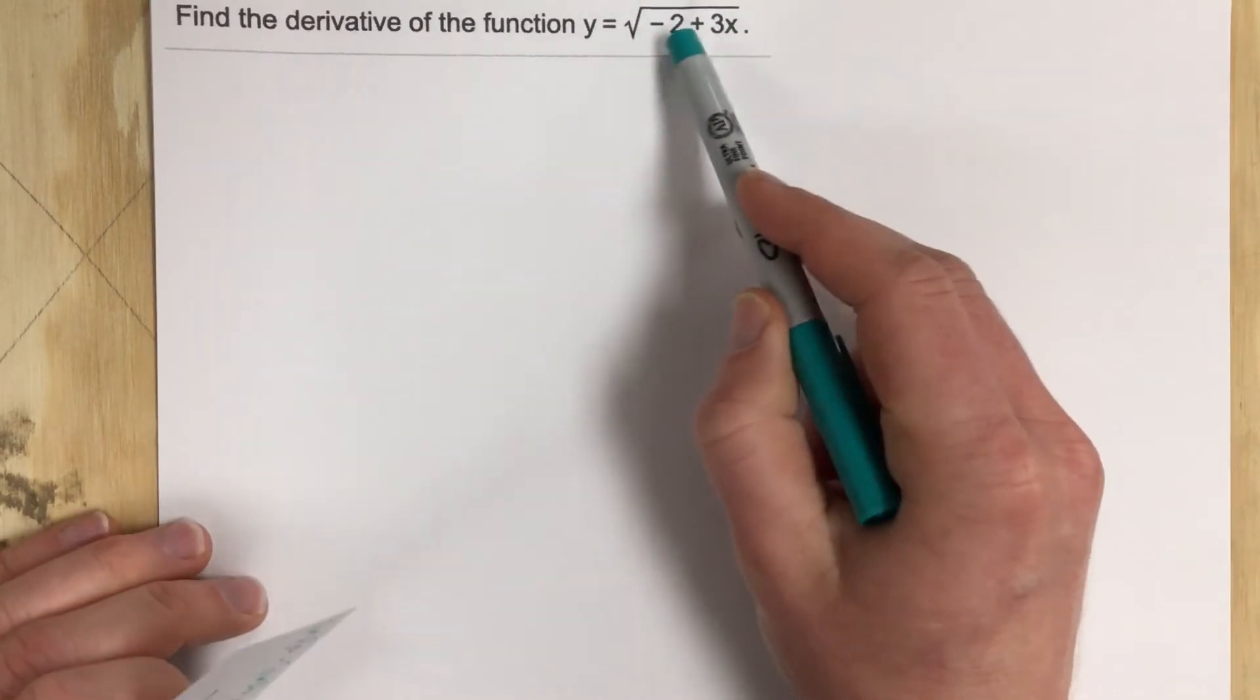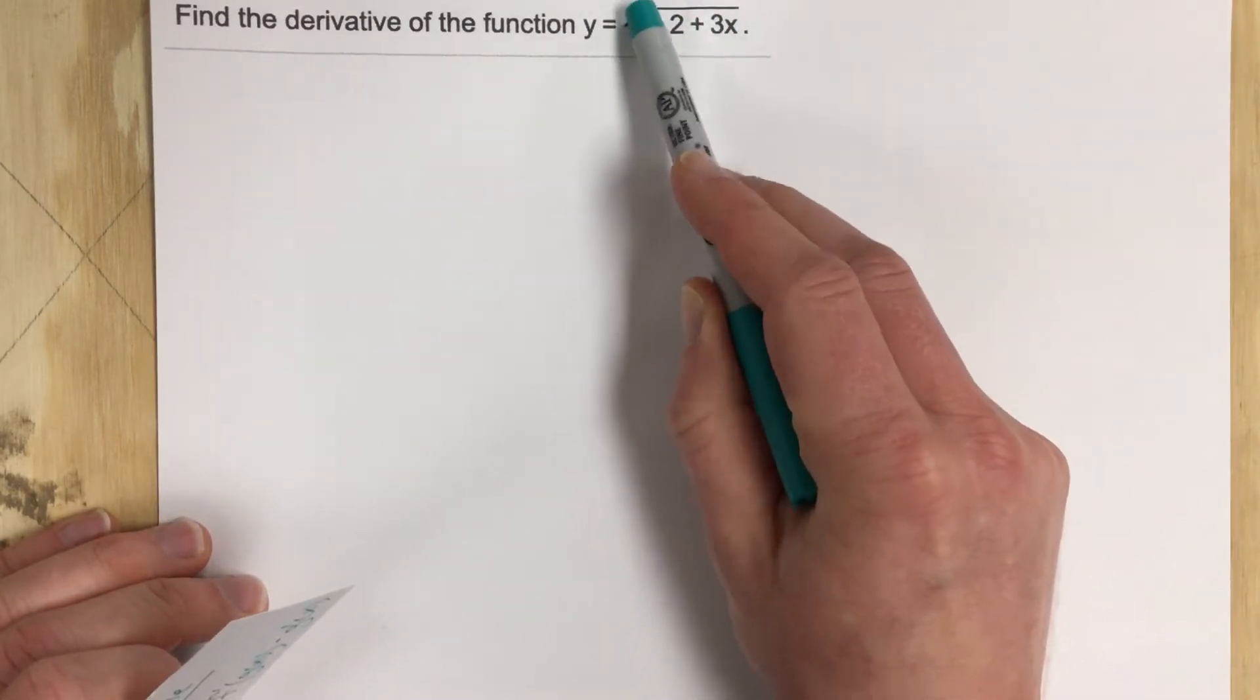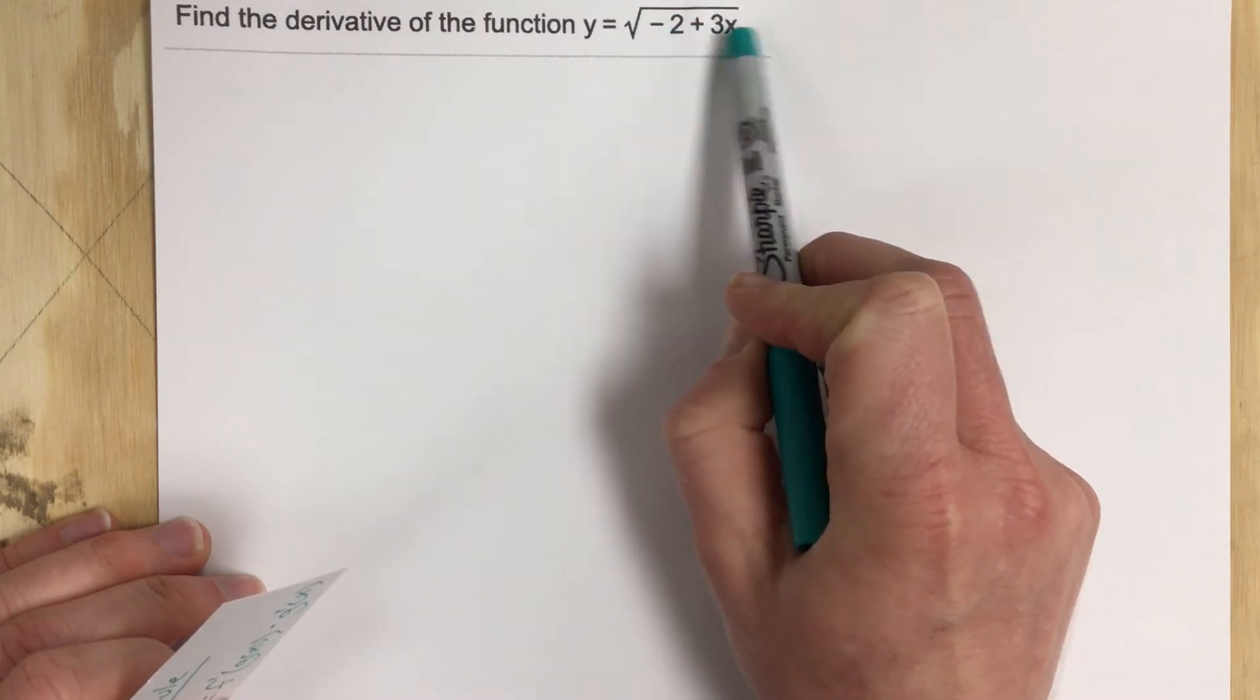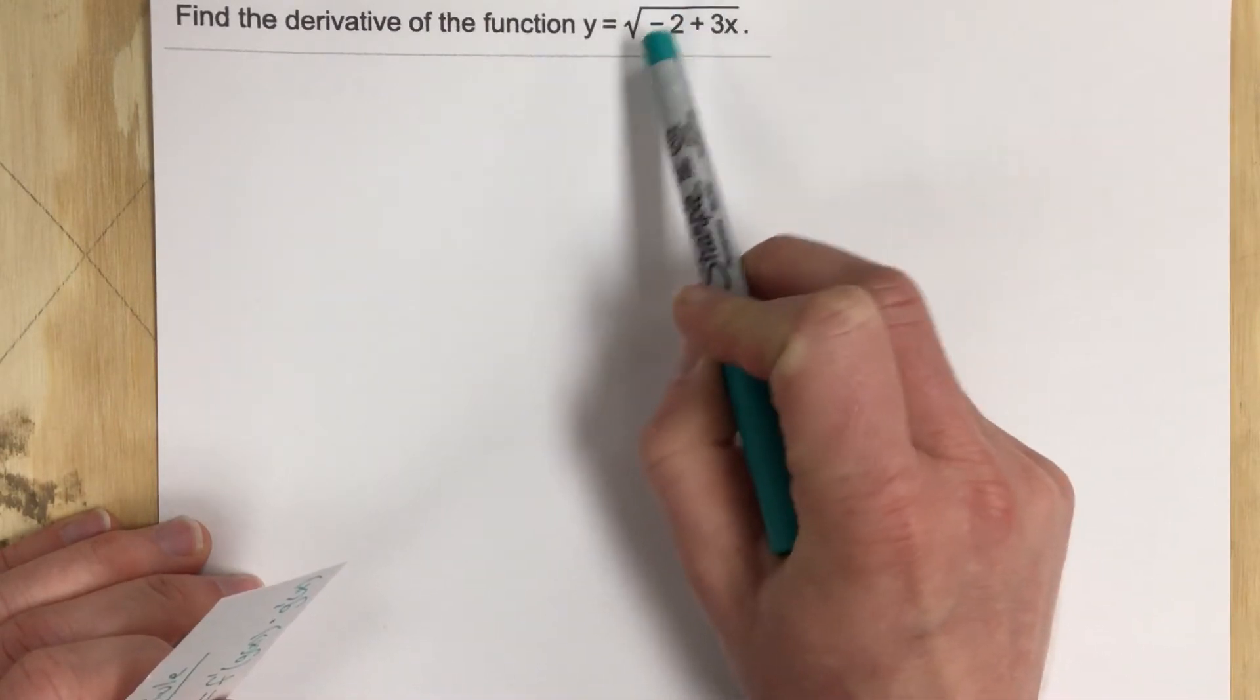You'll notice we have a function inside of a function. Our function on the inside is negative 2 plus 3x. The function on the outside is root x.